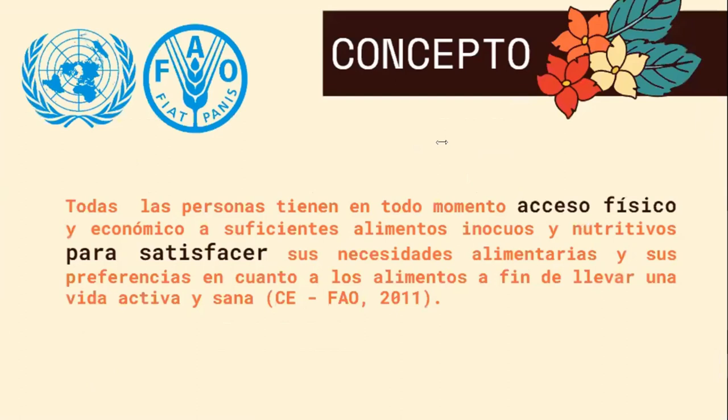Bien, ahora vamos a empezar con lo que es la seguridad alimentaria. Actualmente, más o menos 690 millones de personas en todo el mundo tienen el problema del hambre, y es algo tan importante poder hacer que esa situación de acceso a los alimentos llegue a cada uno de los pobladores; se presenta casi como un problema mundial al que se le han otorgado diferentes estrategias para poder solucionar. Pero si nosotros tenemos en cuenta que todas las personas tienen en todo momento el acceso físico y económico a poder acceder a estos alimentos, también hablamos de esta parte de satisfacer nuestras necesidades.